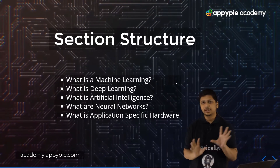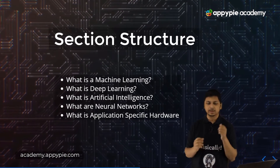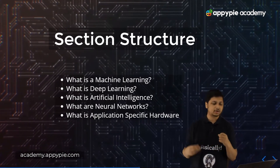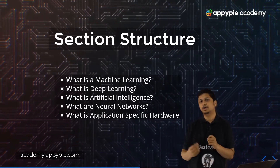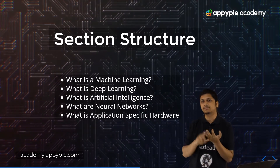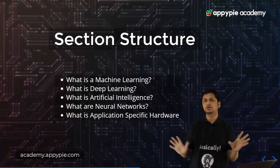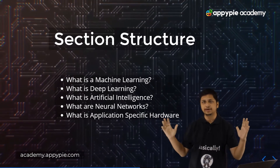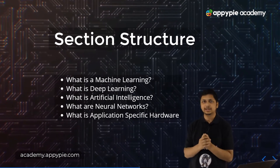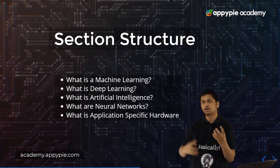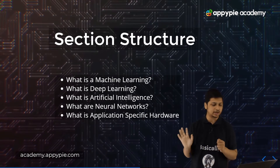For this section we will be looking at what exactly is machine learning, what exactly is deep learning, and what is artificial intelligence. Then we will dive into the details of neural networks, weights, biases, the different activation functions, and how neurons are connected to form a neural network. We will also look at application-specific hardware, or ASIC, which is used in cloud to accelerate machine learning development.